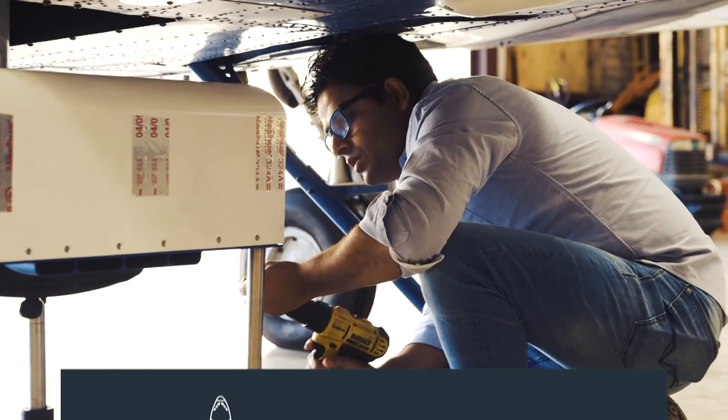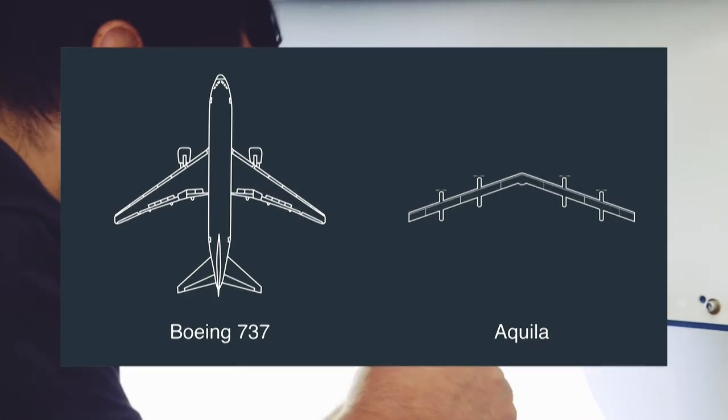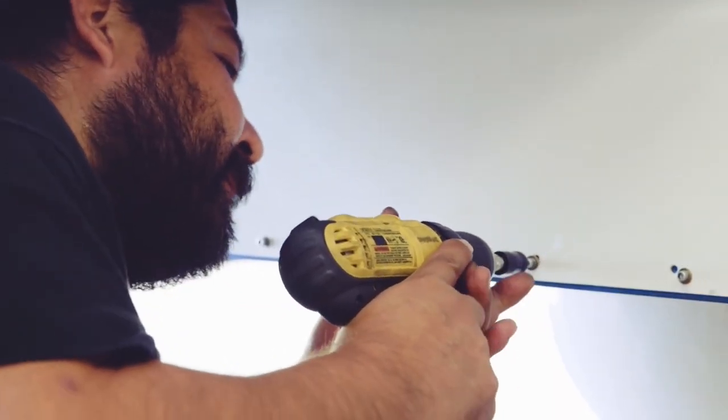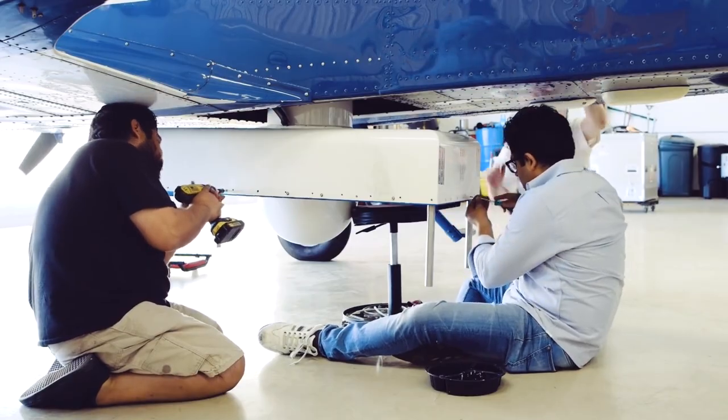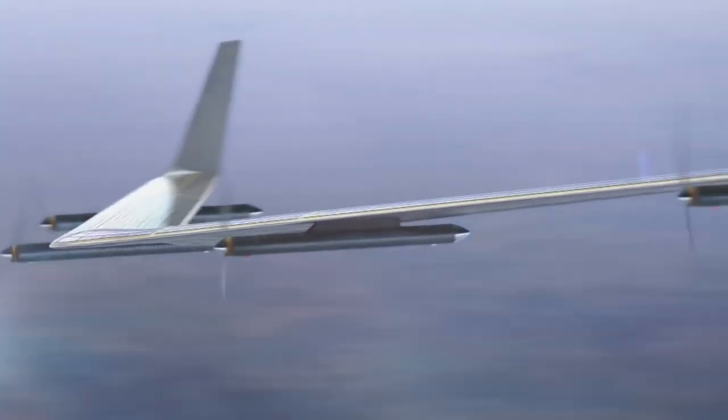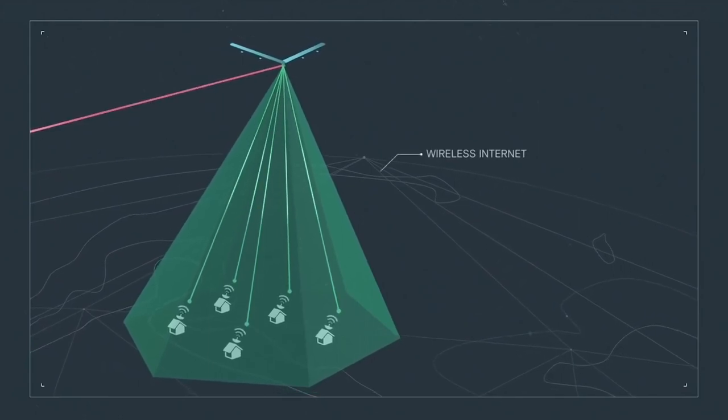The project is called Facebook Aquila and the technology was designed to act as transmission stations for providing internet access to remote areas around the globe. It is intended to fly at altitudes of up to 90,000 feet during the day and 60,000 feet during the night.